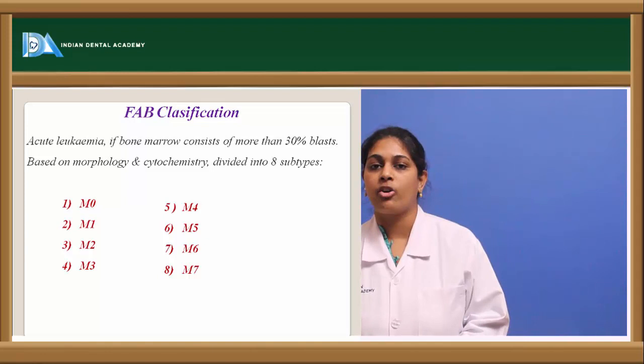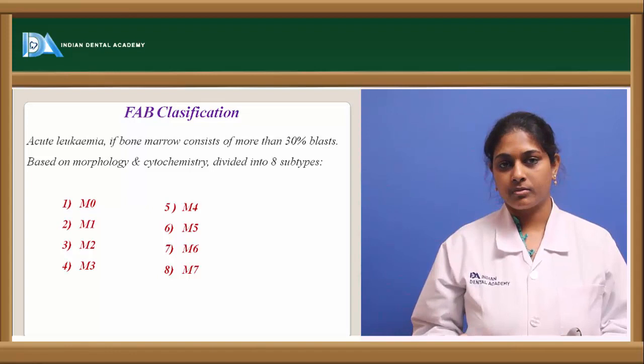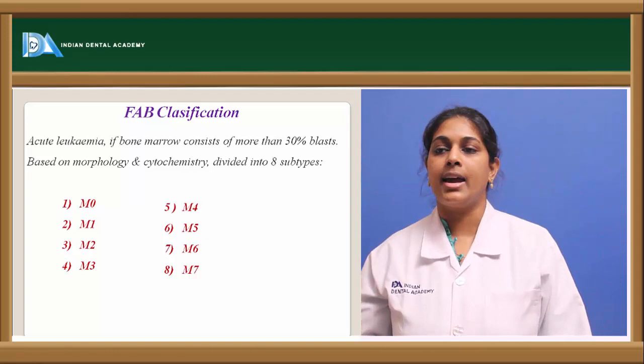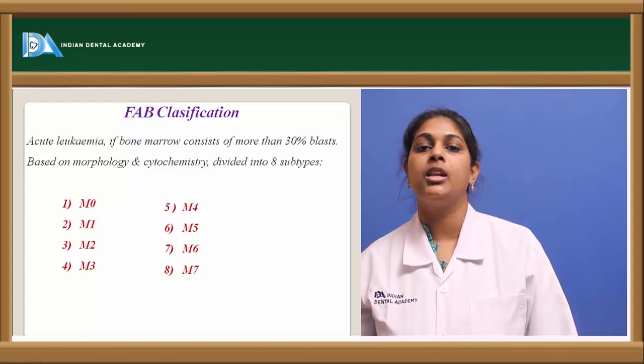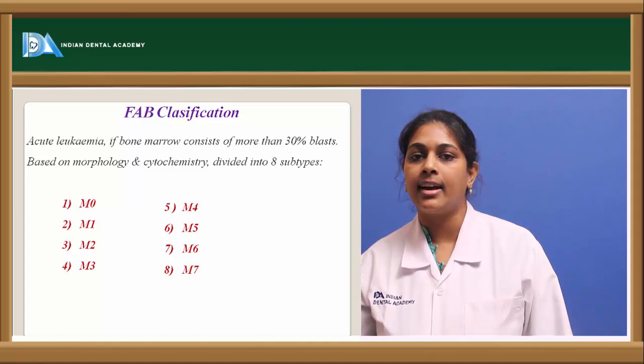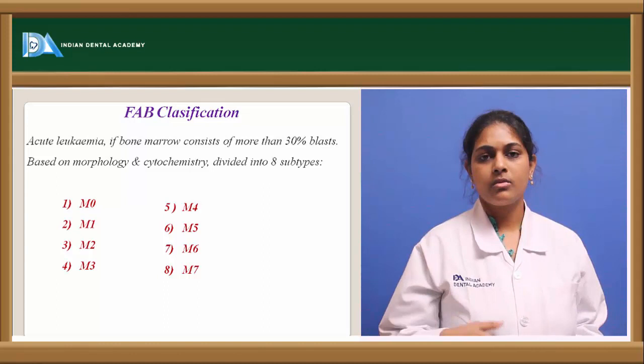M1 AML is characterized by lack of maturation, seen in 20% of AML cases. Myeloblasts are the predominating cells with only few granules, and M1 stains positive for myeloperoxidase. M2 is AML with maturation, constituting 30% of all AML cases. Myeloblasts along with promyelocytes predominate, Auer rods are present, and it stains myeloperoxidase-positive at a grade of 3.